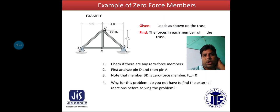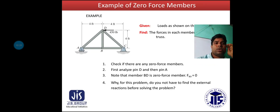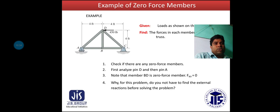Here is a simple example of a Zero Force member problem. A truss is connected at joints where points A and C are tightly fixed, the vertical distance is four feet, and loads are applied as shown in the figure. Find the force in each member of the truss. For calculation, first check if there are any Zero Force members.